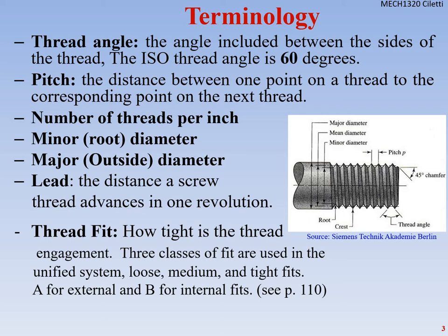The lead is the distance the screw thread advances in one revolution — so as you turn a screw, how far it advances into or out of the hole depending on direction. The thread fit is how tight the thread engagement is. There are three classes of fit: loose, medium, and tight. We use A for external fits and B for internal fits.